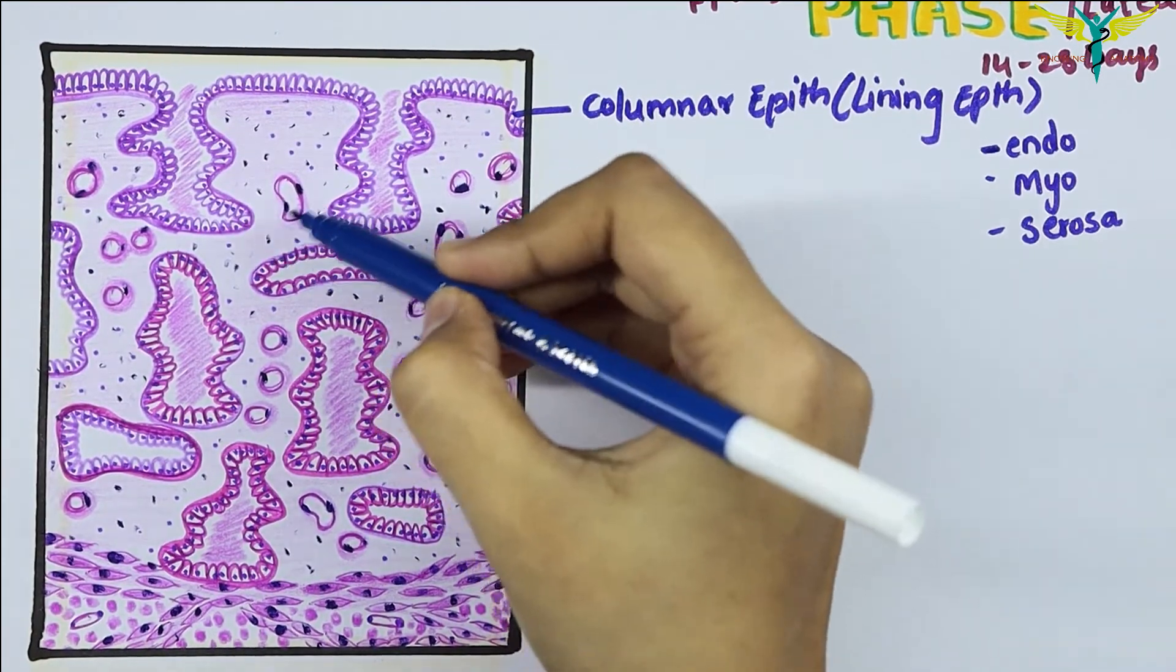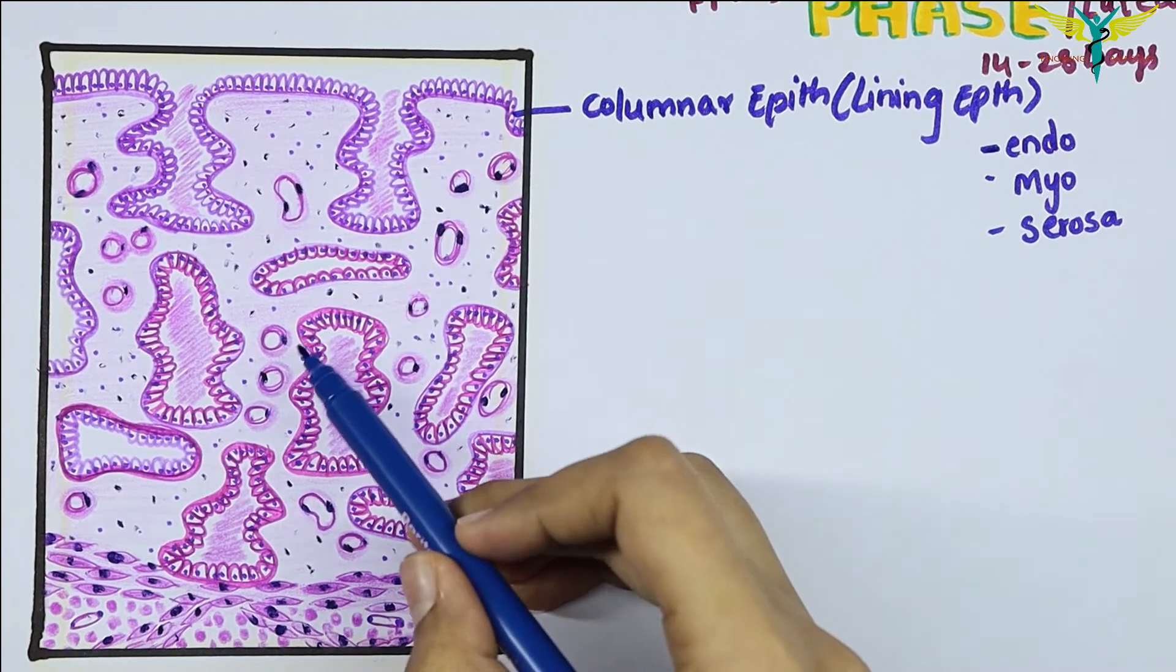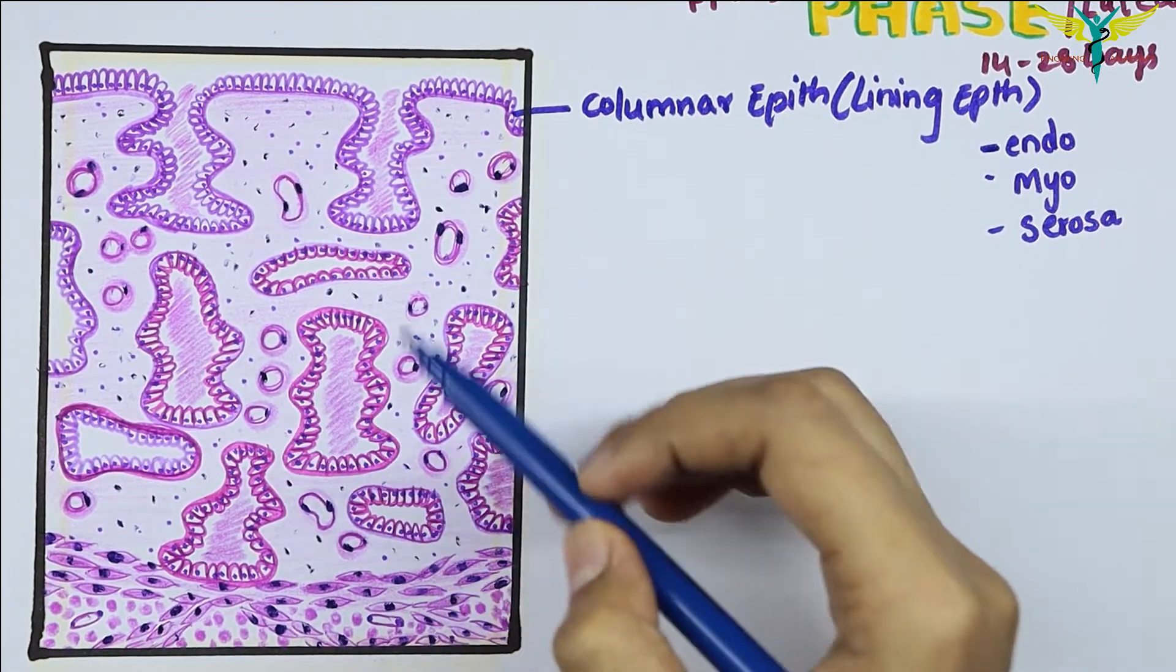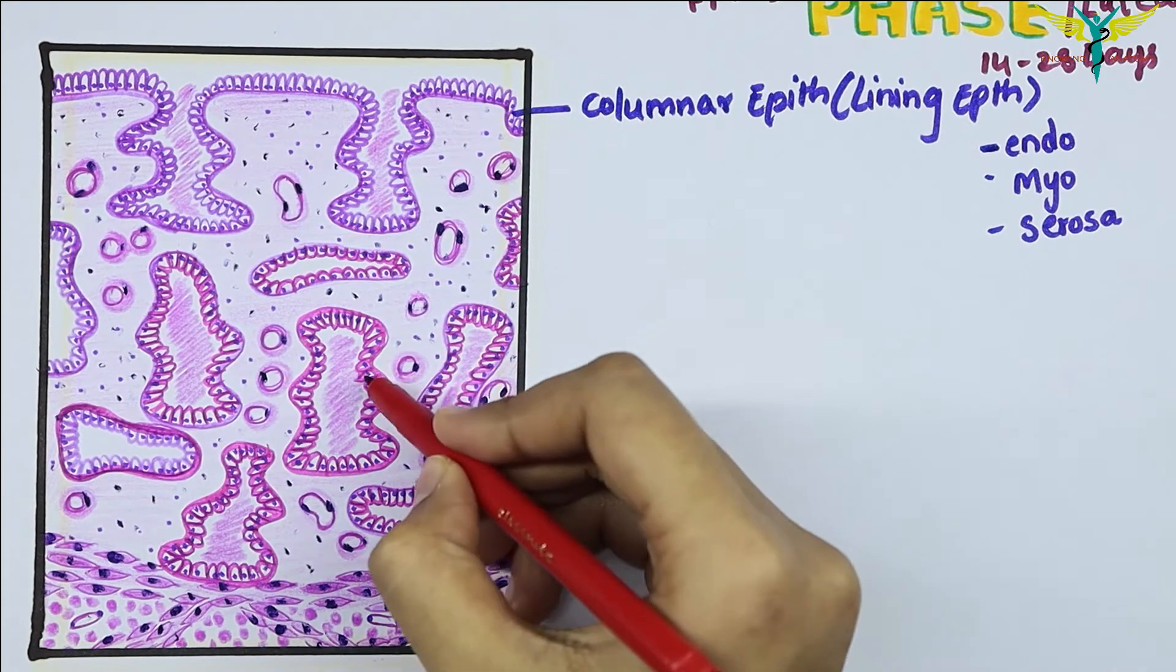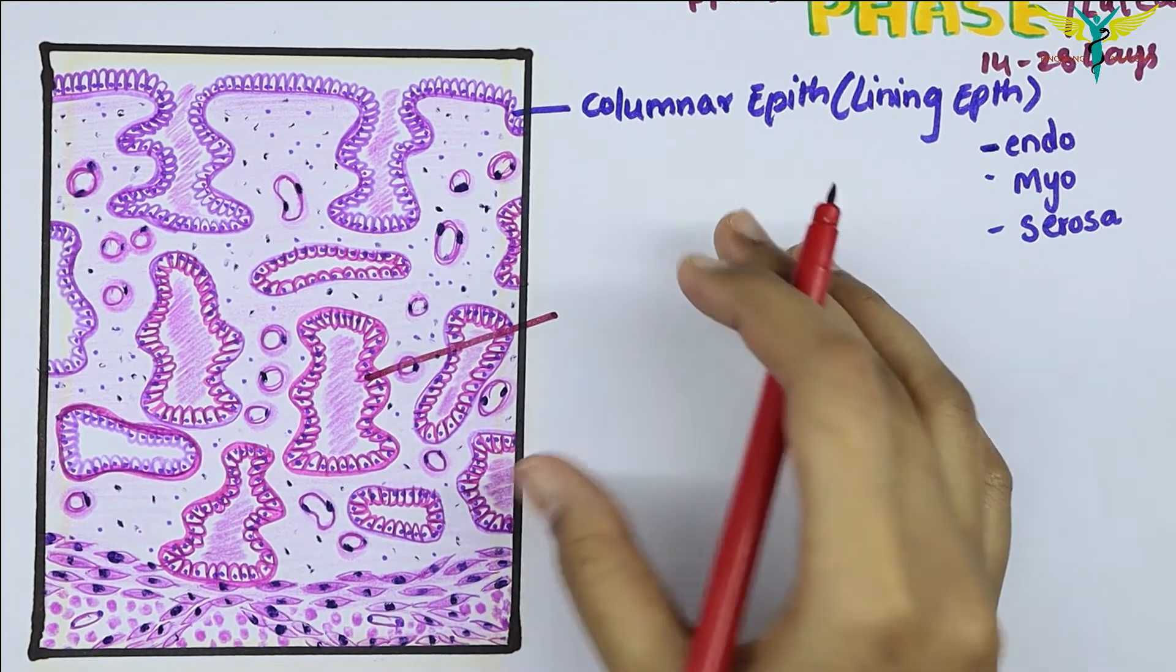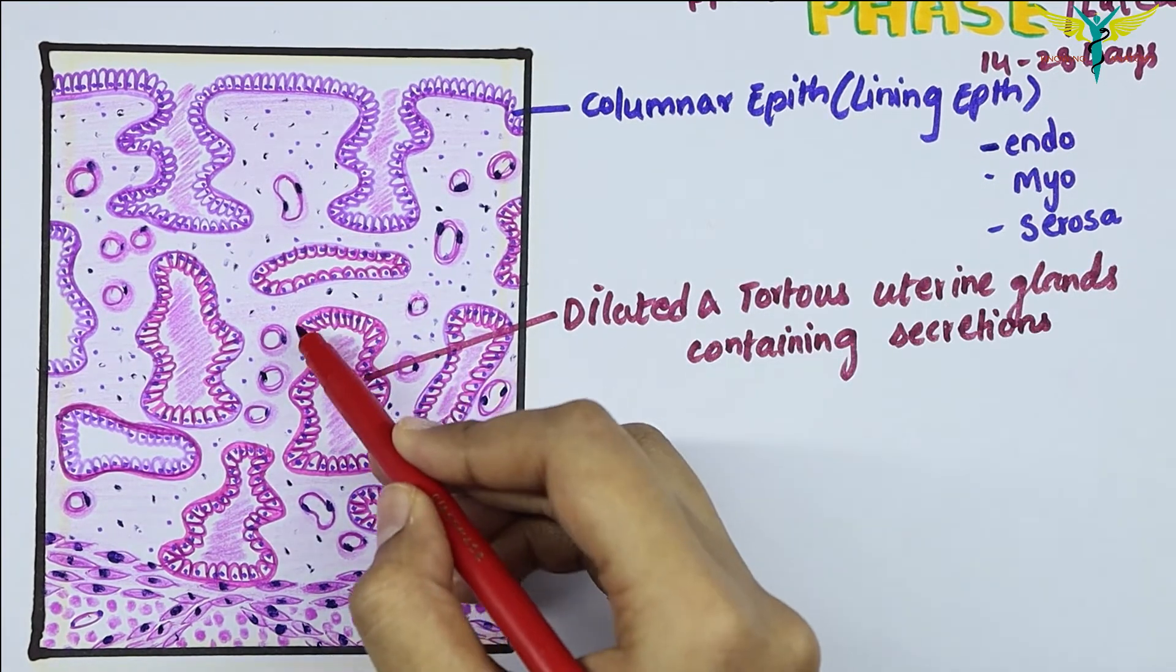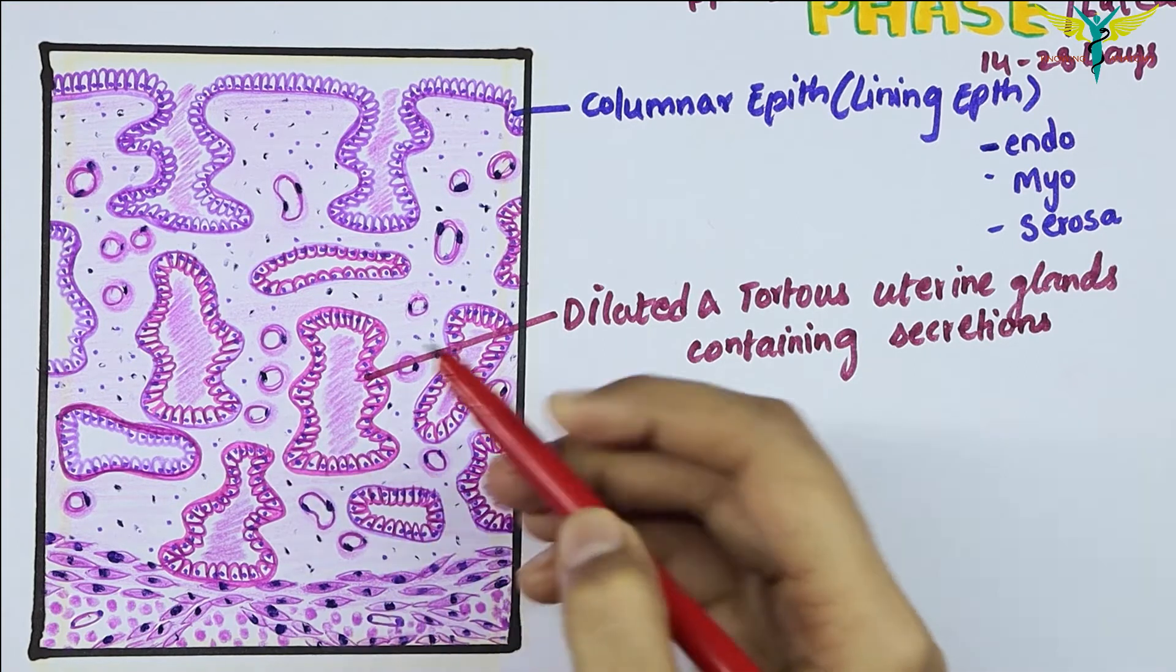The uterine glands are elongated, and they become dilated and tortuous. As a result, they have saw tooth margins in the cross sections. These are the dilated and tortuous uterine glands with secretion, and you can see they have sharp saw tooth-like margins.